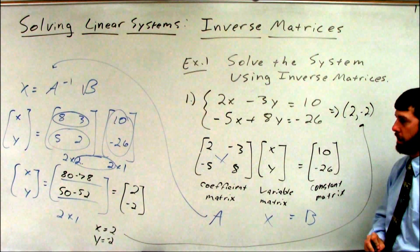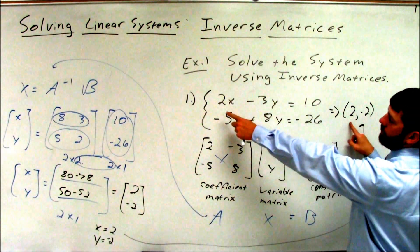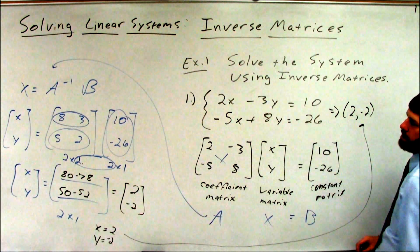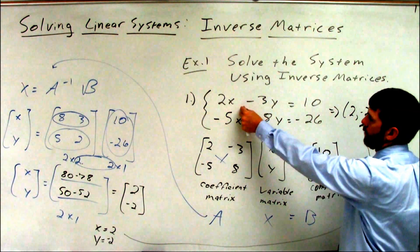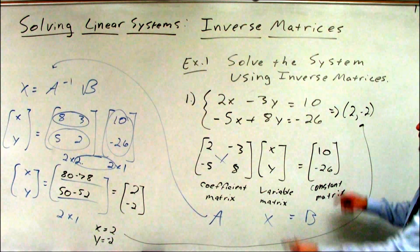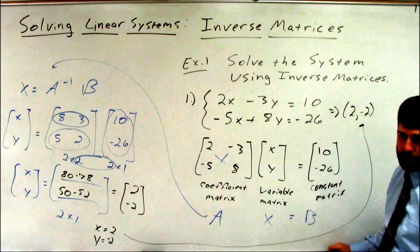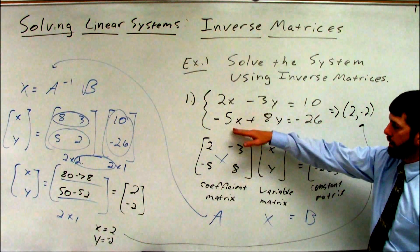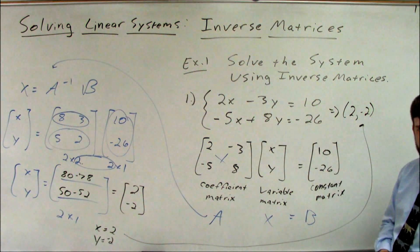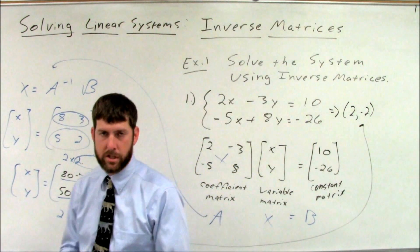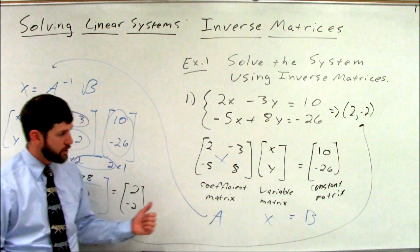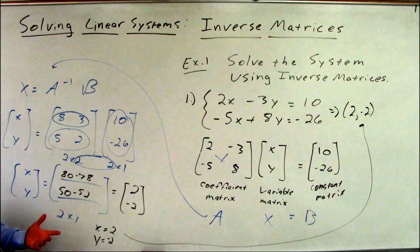If you want to check that, go right ahead. 2 times 2 is 4. Minus 3 times negative 2 is 6. 4 plus 6 is 10. Negative 5 times 2 is negative 10. 8 and negative 2 is negative 16. Negative 10, negative 16 is negative 26. So this is why we can use matrices or inverse matrices to solve a linear system.